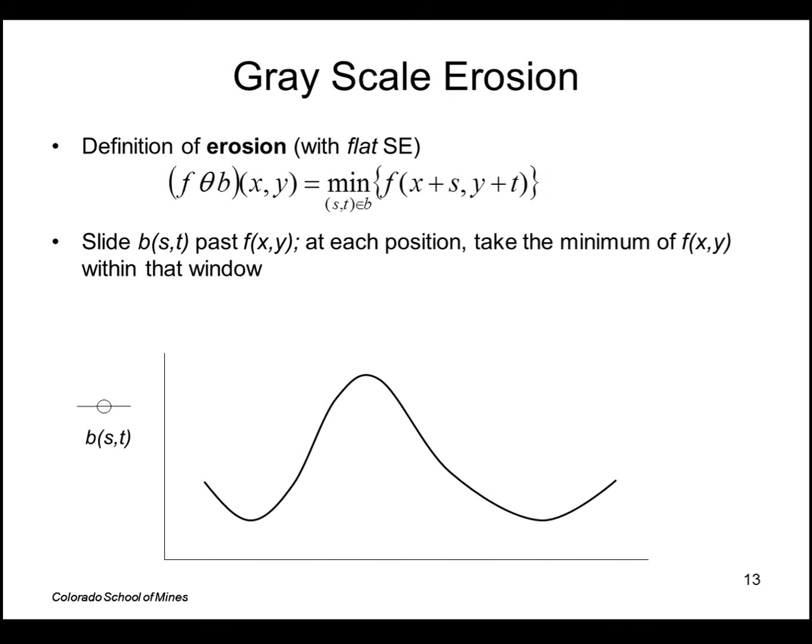The definition of erosion is taking the local minimum. So we slide the structuring element past the values of F. At each position we take a local minimum. So essentially we can think of that as coming up from the bottom until we get to the point where the structuring element touches the function F. And that essentially reduces the overall intensity by taking the local minimum.